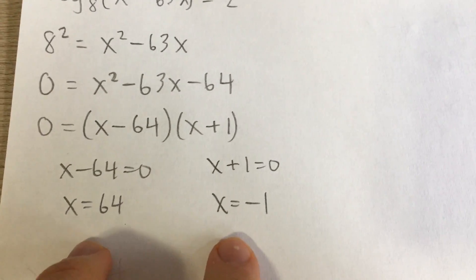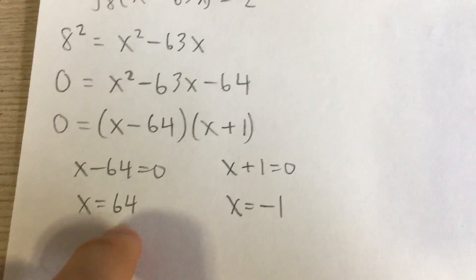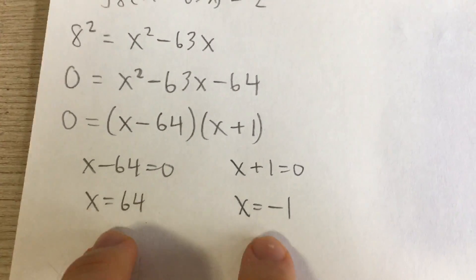Solving for each factor here, x minus 64 equals 0, that means x has to be 64. x plus 1 equals 0, that means x has to be negative 1. So these are our two solutions.